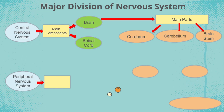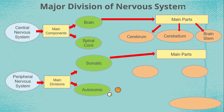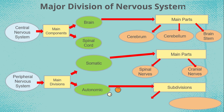Under the peripheral nervous system, we have two main divisions: the somatic and the autonomic. Under somatic, we have spinal nerves and cranial nerves. For autonomic, we have two subdivisions: sympathetic and parasympathetic.